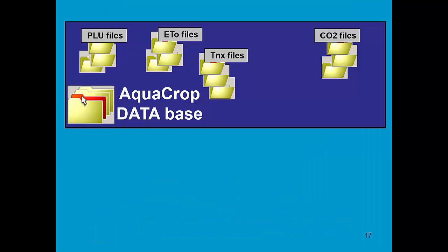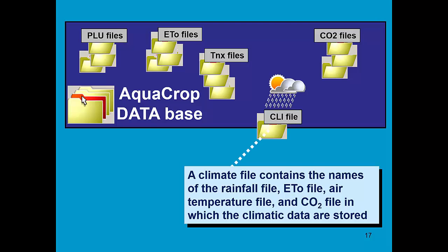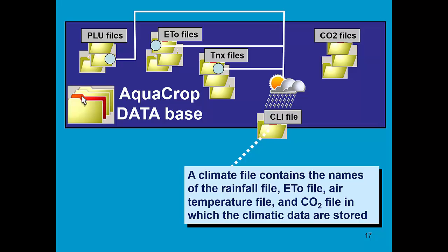So in the AquaCrop database, we have imported PLU, ET0, and temperature files and a set of CO2 files. To create a CLI file, which is actually an enveloping file, we have to select the PLU file, ET0 file, temperature file, and the appropriate CO2 file. The climate file just contains the name of the rainfall file, ET0 file, air temperature file, and CO2 file.